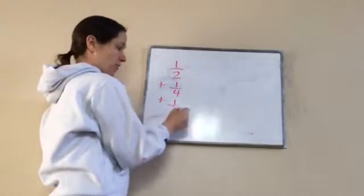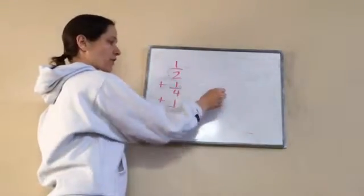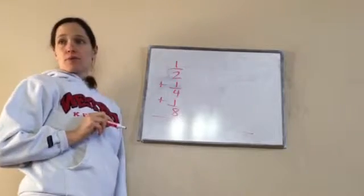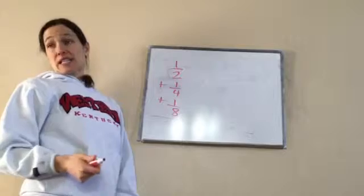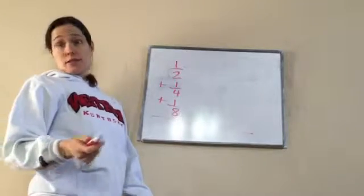I try to come up with a denominator that eight will go into, four will go into, and two will go into - all three of these will go into the same number. This one's easy: eight.